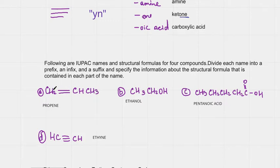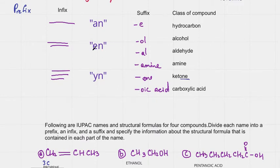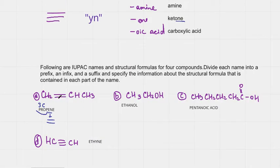So let's go ahead and start with A. A says propene. Prop is the prefix, and it tells us that there are three carbons: one, two, three. Then we have 'en', and that tells us that we have a double bond. Remember, if we have 'en' here, that means we have a double bond. And the ending is 'e'. E tells us that we have a hydrocarbon. So propene tells us that we have a three-carbon molecule that has a double bond, and only carbons and hydrogens are there.